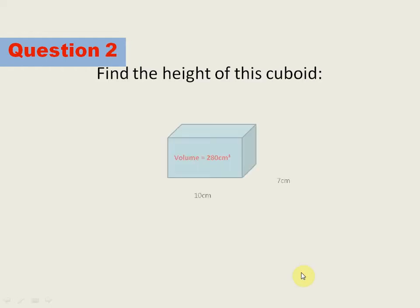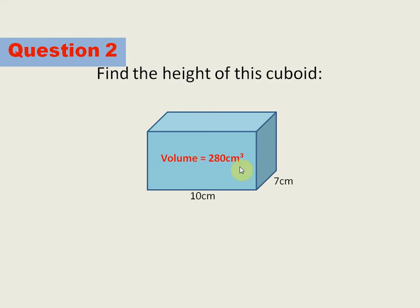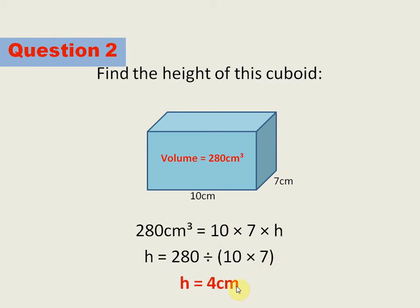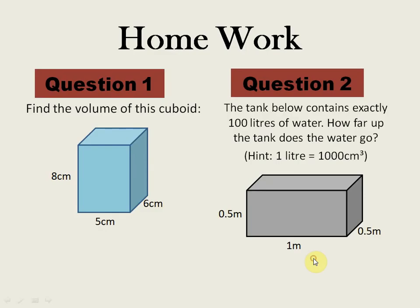Question number two: find the height of a cuboid where the volume is 280 cm³. Volume = length × width × height. Dividing 280 by 70 gives the height = 4 cm. This type of question gives the volume and leaves one dimension unknown. Multiply the known dimensions and divide the volume by that product to find the unknown dimension.